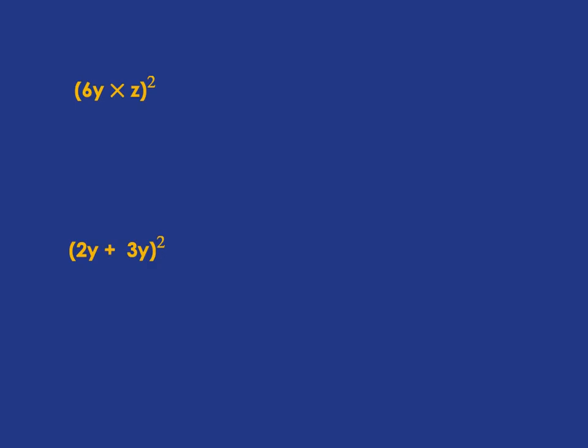We first look at what's being squared. Well, it's 6y multiplied by z that's being squared. So it's 6y multiplied by z multiplied by 6y multiplied by z. Everything there is just multiplied together. We can just go ahead and do the multiplication.